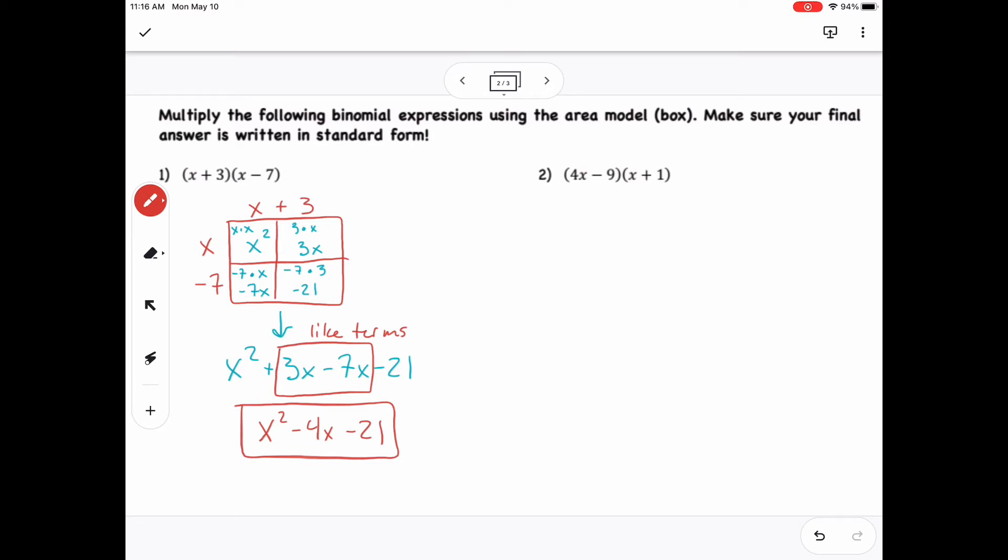Okay, and we can use this model for anything, or any set of multiplication between binomial expressions. It doesn't matter which one goes on top and which one goes on the left side. It will work out the same way. So here I have 4x times x gets me 4x squared. Negative 9 times x gives me negative 9x. 1 times 4x gives me 4x. Negative 9 times 1 gives me negative 9. And then when I pull them out, like terms of negative 9x and 4x go together, so it gets me negative 5x. And then that is my quadratic expression.